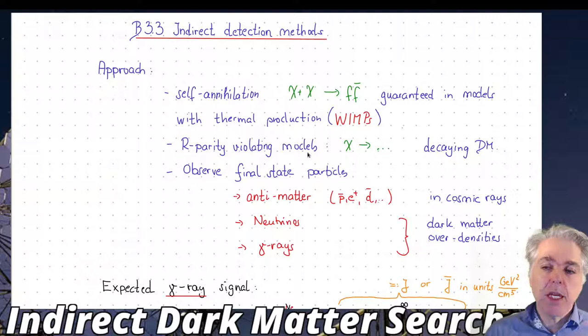In the case of our R-parity violating models we would in most cases deal not with self-annihilation but with the decay of dark matter particles. There's a couple of popular models which consider the Gravitino as the best dark matter candidate and then this one would produce through decays a signal as well. That's maybe the only opportunity to see these kind of models.